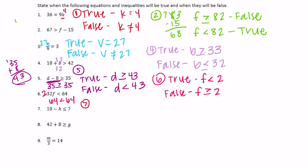Number seven: 10 minus h is less than or equal to 7. Let's make them equal — 10 minus 3 is 7, and 7 is less than or equal to 7, so that's true. If we used 4 for h, 10 minus 4 is 6, and 6 is less than or equal to 7. If h is 5, that's 5, also less than or equal to 7. So for it to be true, h needs to be greater than or equal to 3. For it to be false, h must be less than 3 — for example, 10 minus 2 is 8, and 8 is not less than or equal to 7.